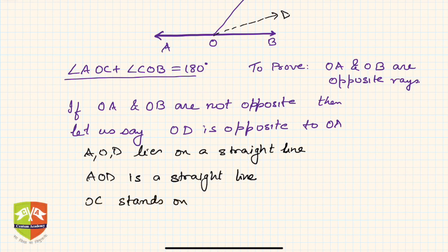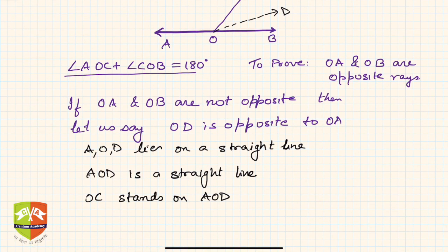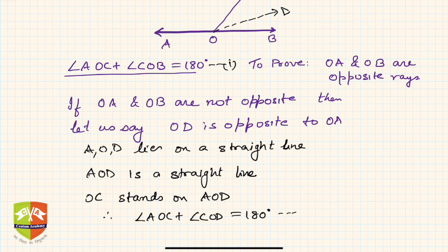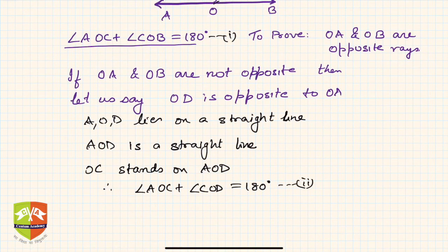Since OC stands on line AOD, by the previous theorem, angle AOC plus angle COD must be equal to 180 degrees. Let us call the given equation as equation one, and this new equation as equation two.